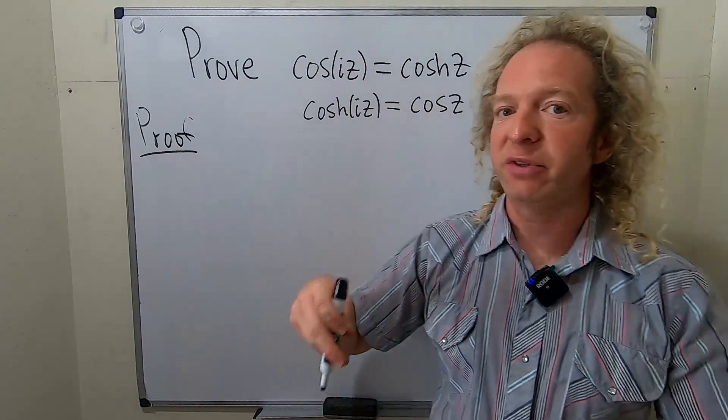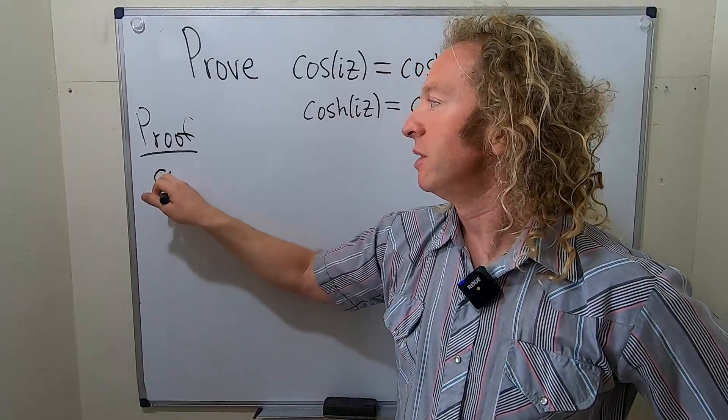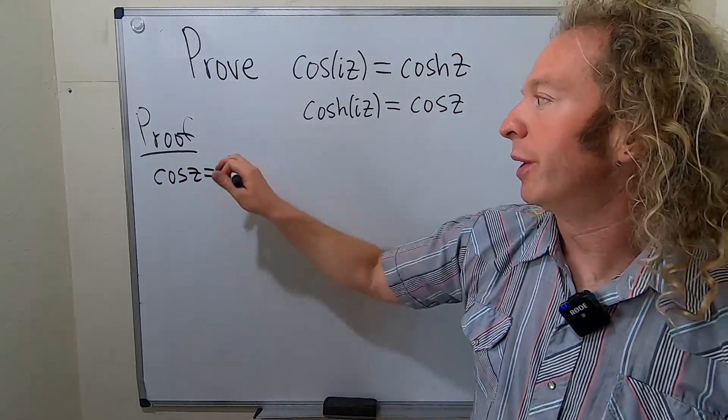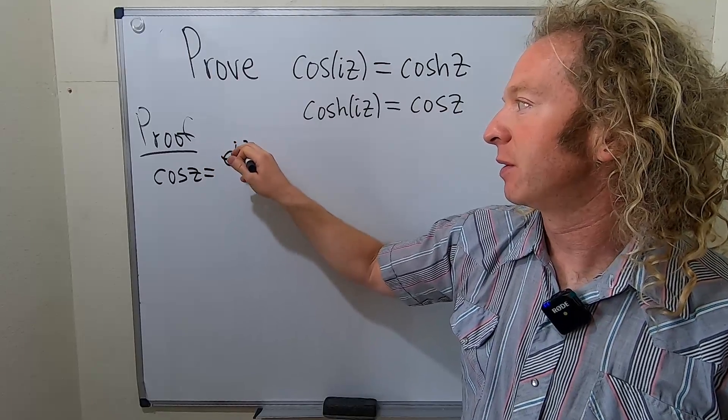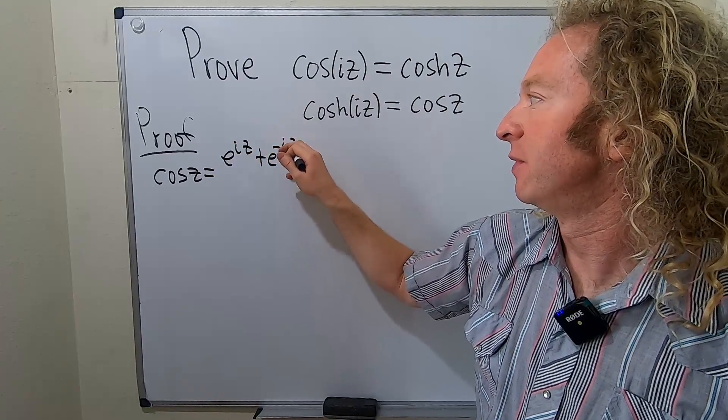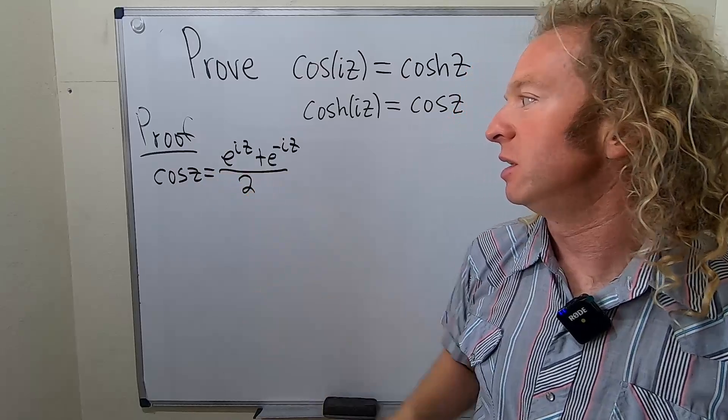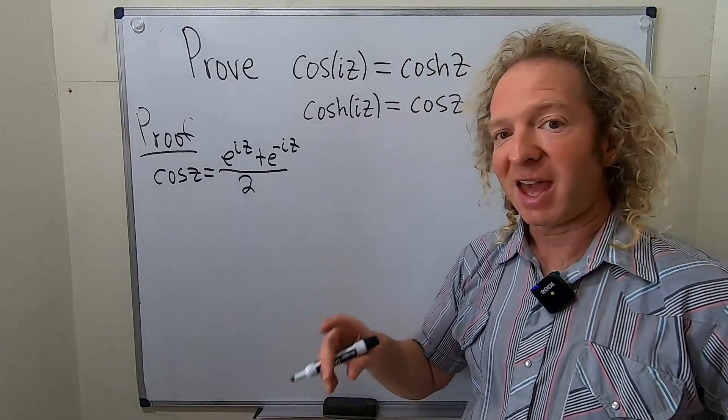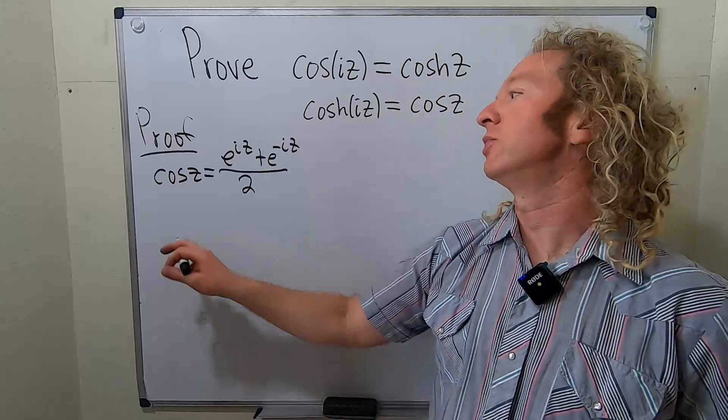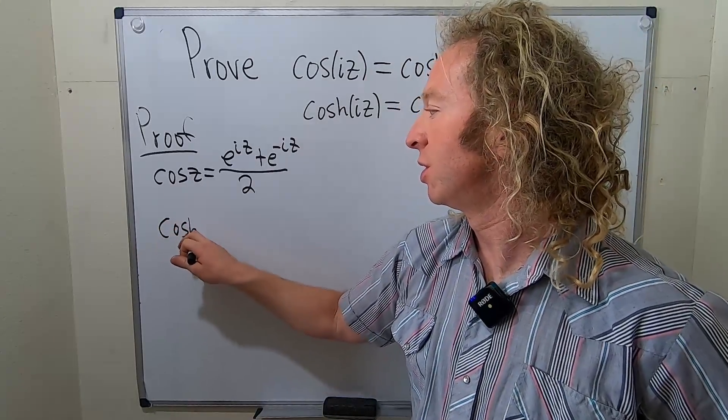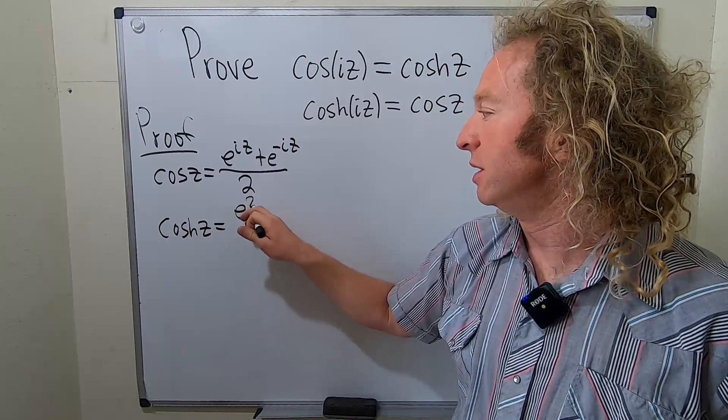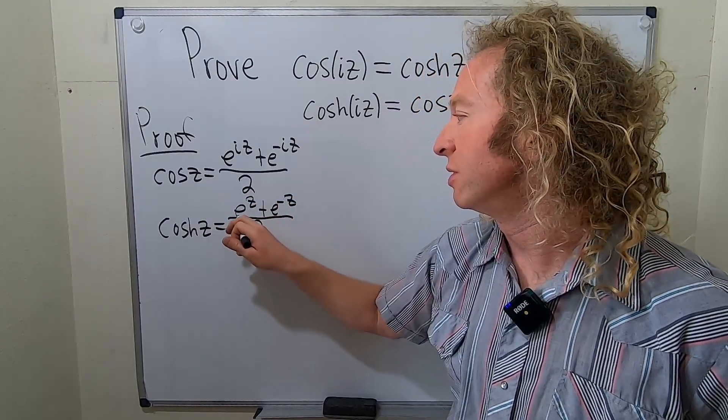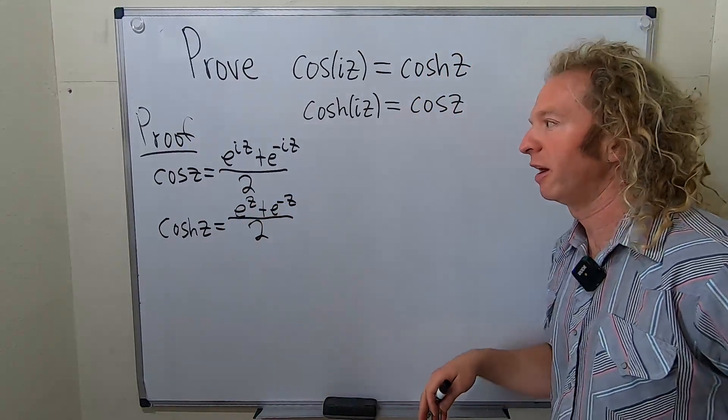So the definition of the complex cosine is the following. Cosine z is equal to e to the iz plus e to the negative iz over 2. So this is the complex valued cosine function. And the hyperbolic cosine function, cosh of z, this will be e to the z plus e to the negative z all over 2. So this is the hyperbolic cosine function.